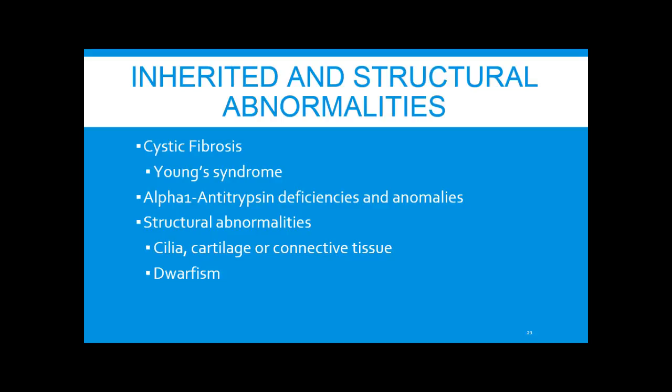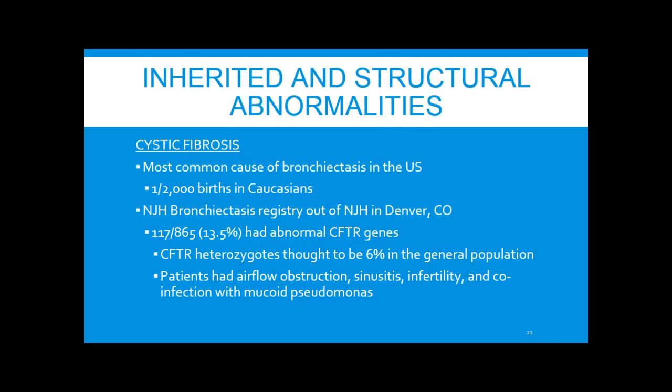Among inherited and structural abnormalities, cystic fibrosis is the most common cause of bronchiectasis in the United States — 1 in 2,000 births in Caucasians. The NJH bronchiectasis registry showed that 117 out of 865 patients with bronchiectasis had abnormal CFTR genes despite normal sweat chloride testing. In the normal population, heterozygosity is thought to be 6%, leading to the thought that having an abnormal gene leads to this condition. These patients were also found to have airflow obstruction, sinusitis, infertility, and co-infection with Pseudomonas.